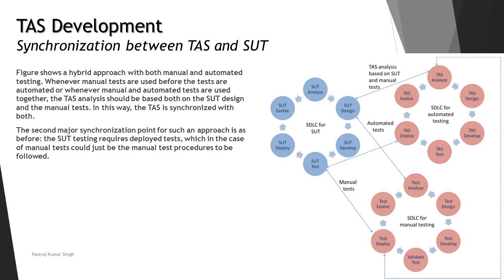How does automation relate to manual testing in this context? The figure shows a hybrid approach that includes both manual and automated testing. Some parts of the application are tested manually, while other parts are tested automatically. On one side we have the SUT SDLC, on another side the SDLC for automated testing, and then the SDLC for manual testing.